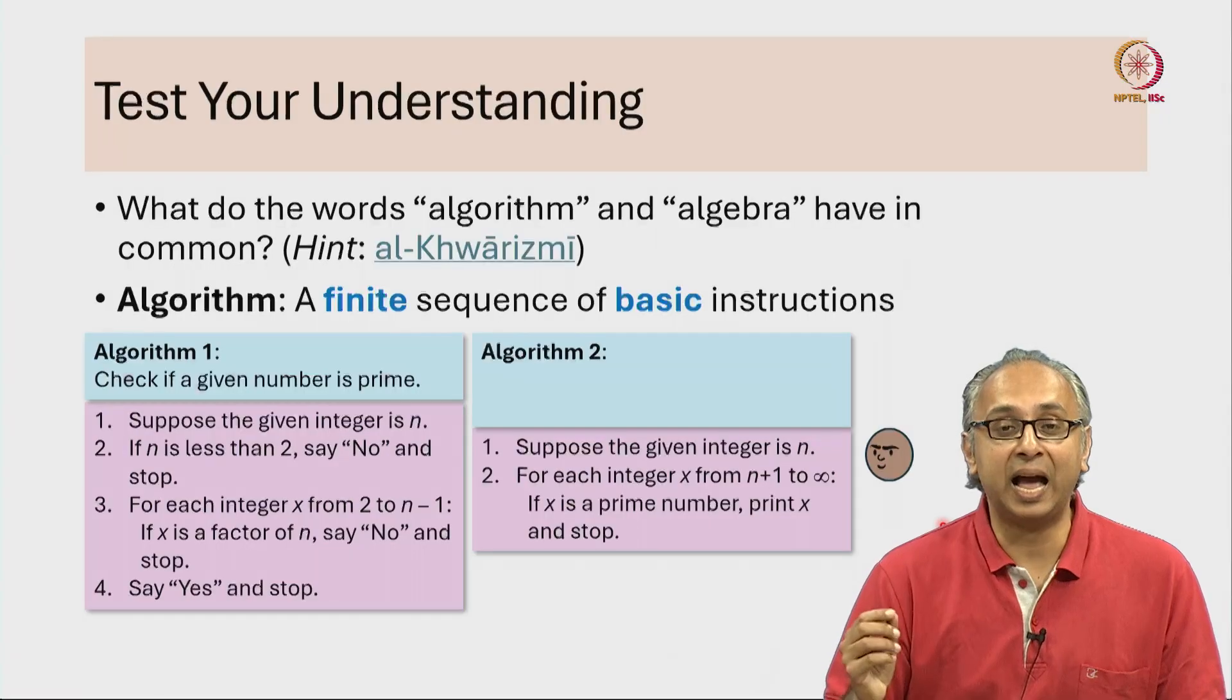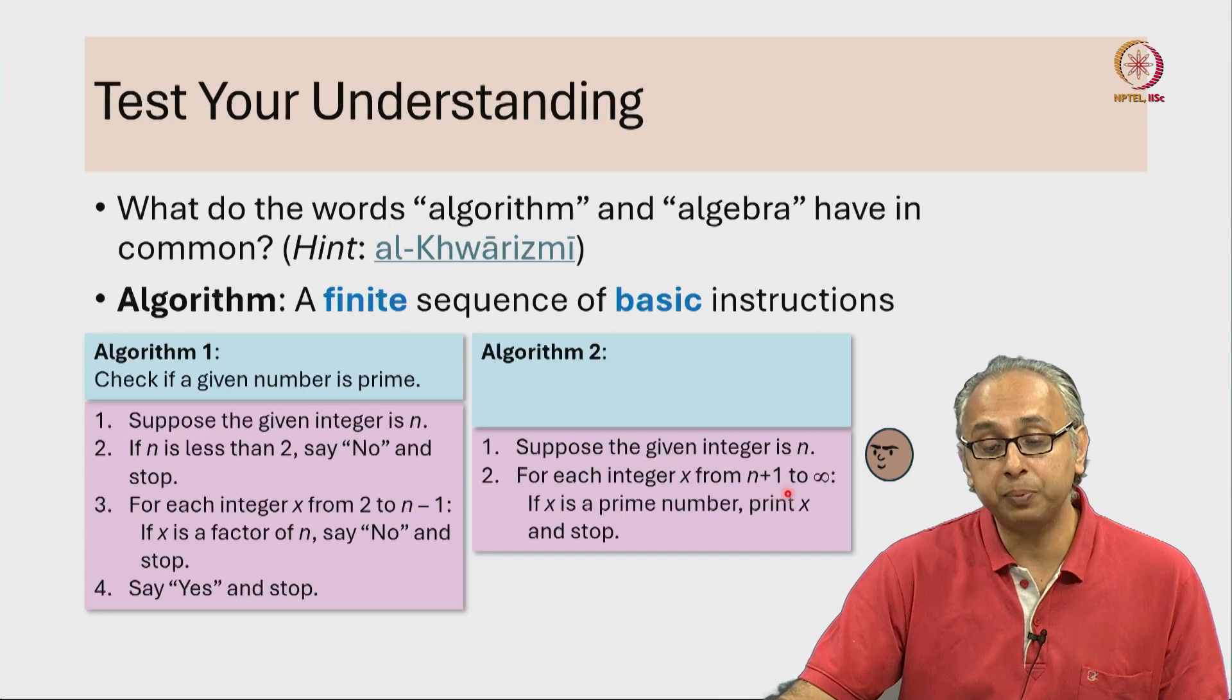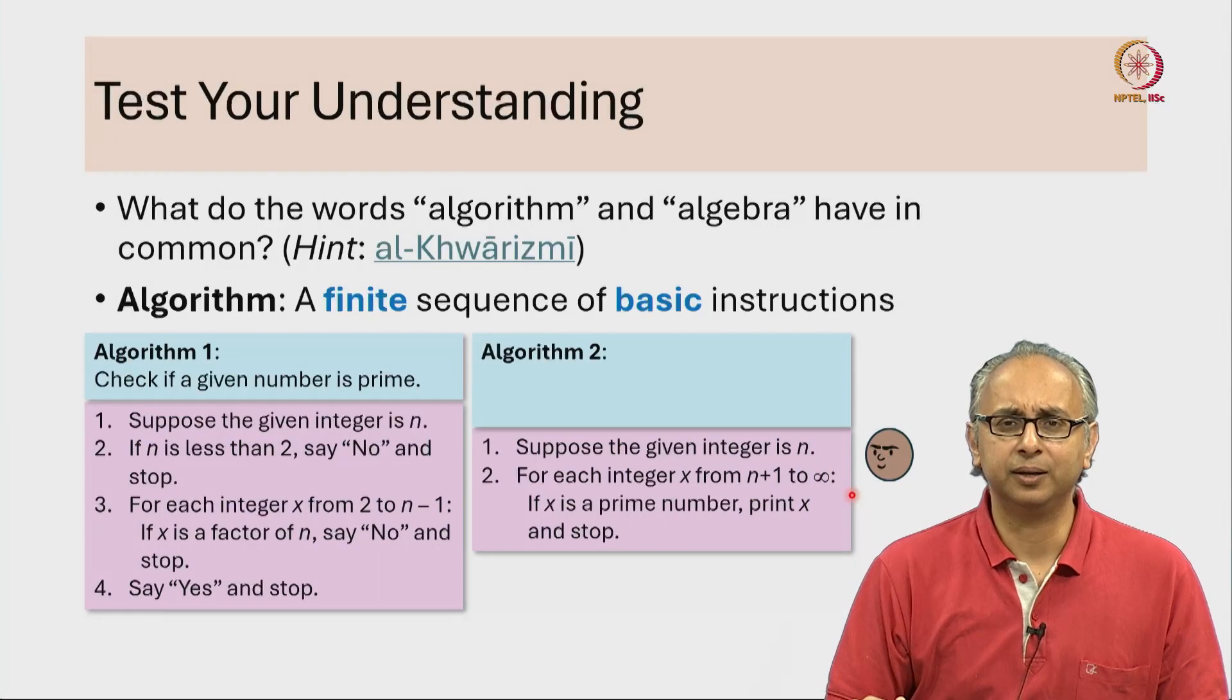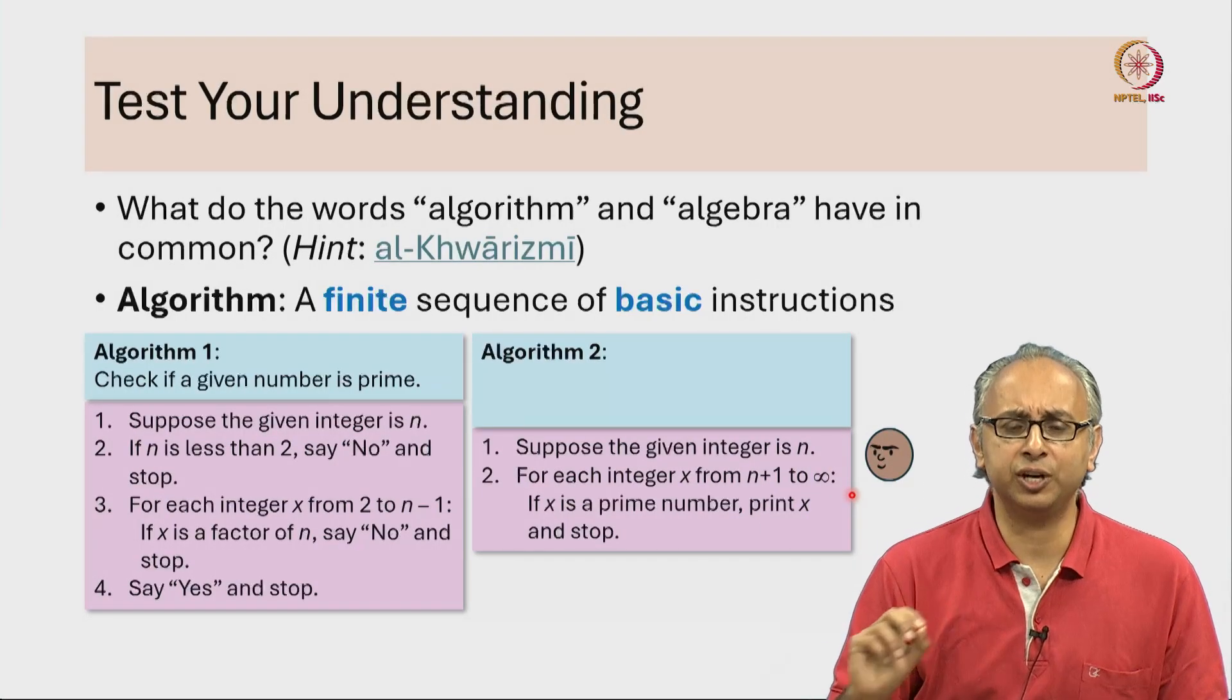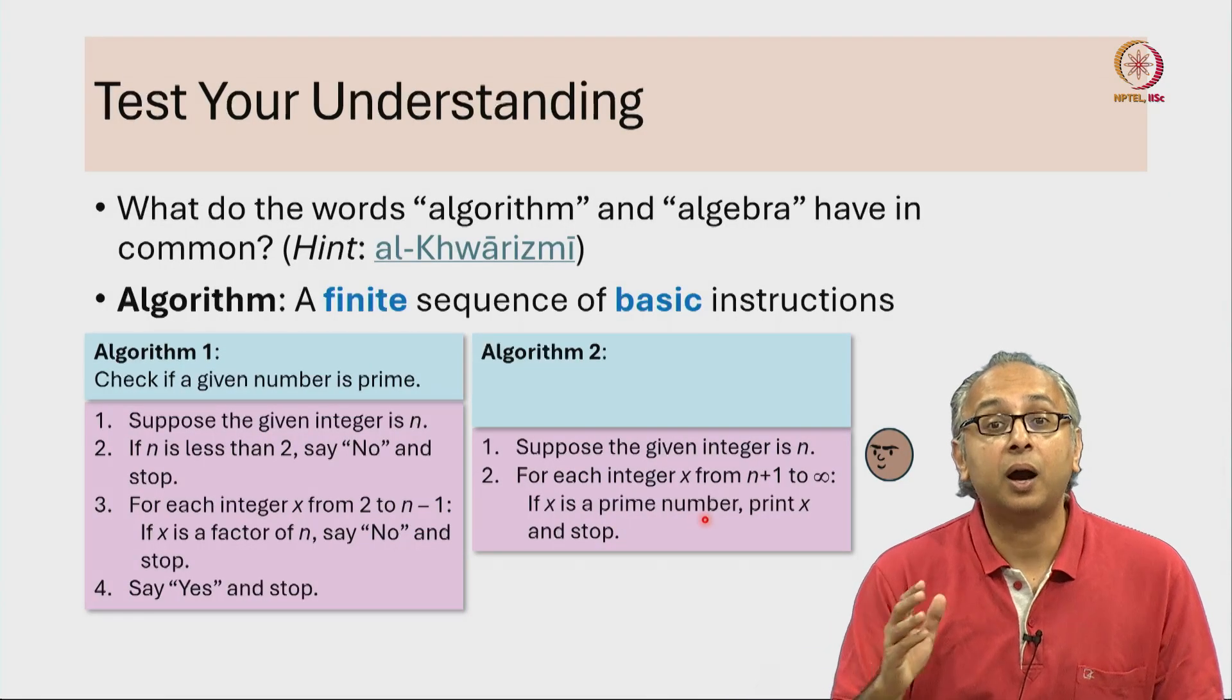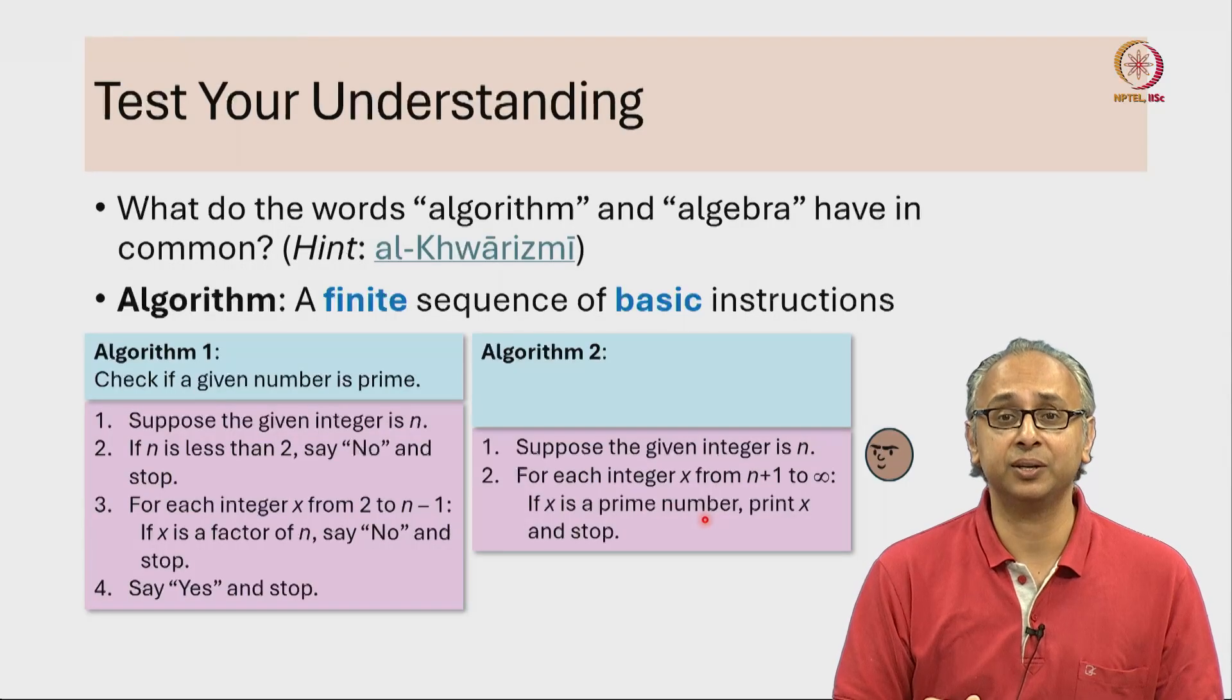Now unlike algorithm 1, here we are checking every integer x from n plus 1 all the way to infinity. For every such integer x, we are checking if x is a prime number. How do we check if x is a prime number?